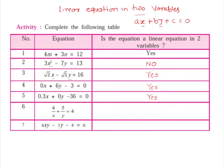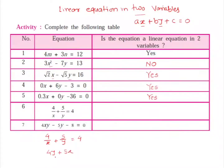Next: 4 divided by x plus 5 divided by y equals 4. At first glance, there are two variables x and y, and the indices of both are 1, so it may seem like a linear equation. But if we simplify — taking the common denominator xy — we get 4y plus 5x over xy equals 4, which gives us 5x plus 4y minus 4xy equals 0.